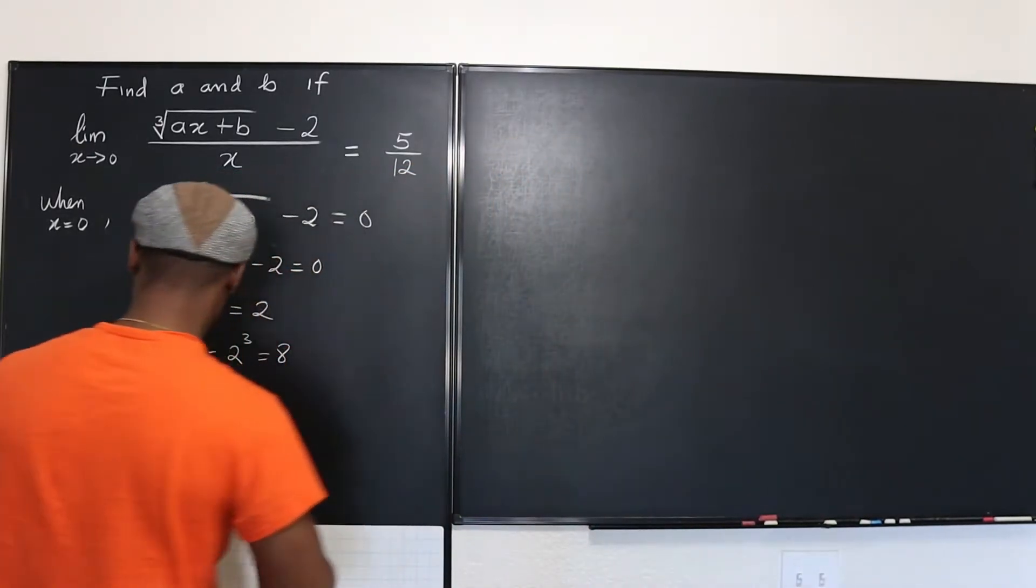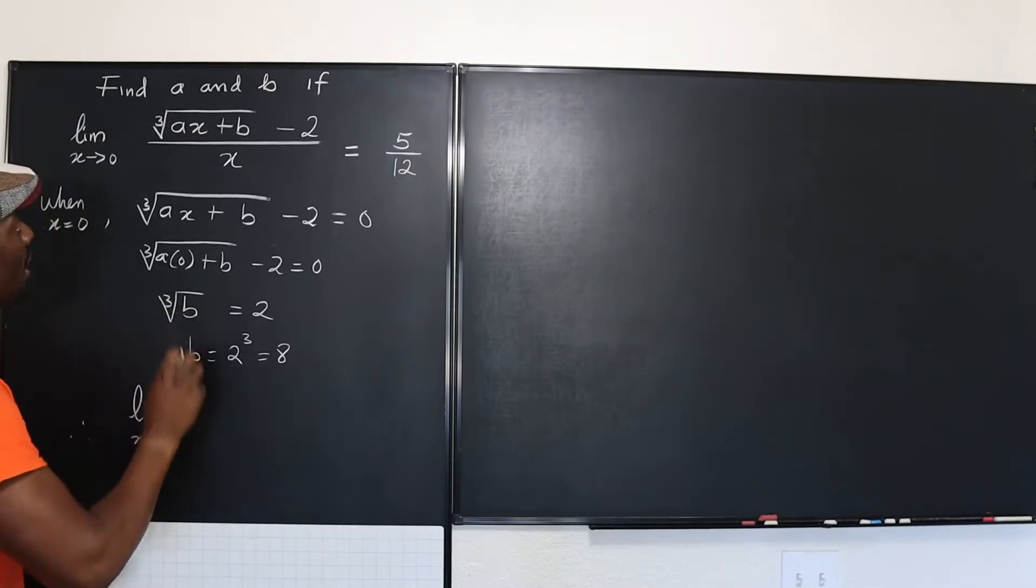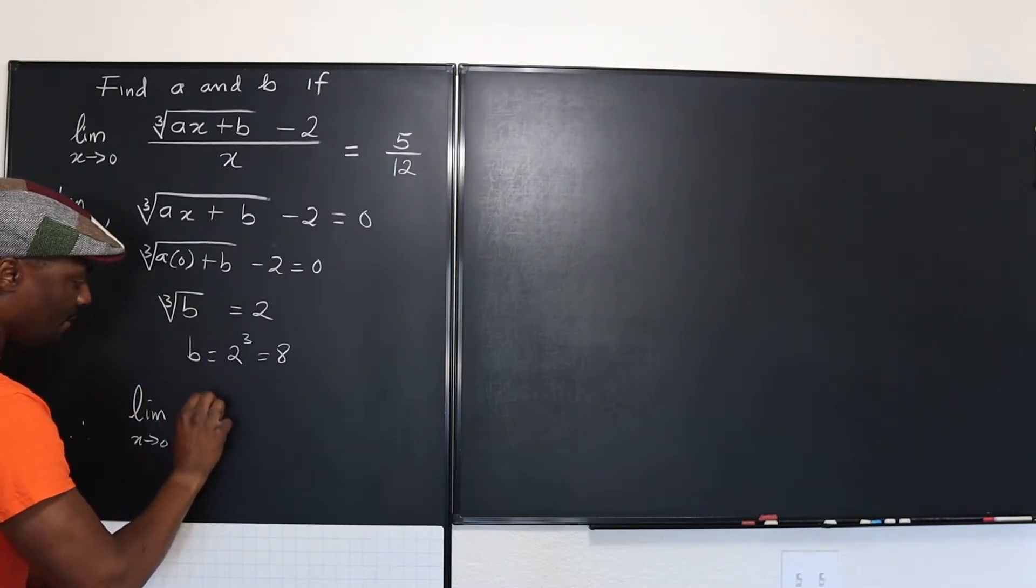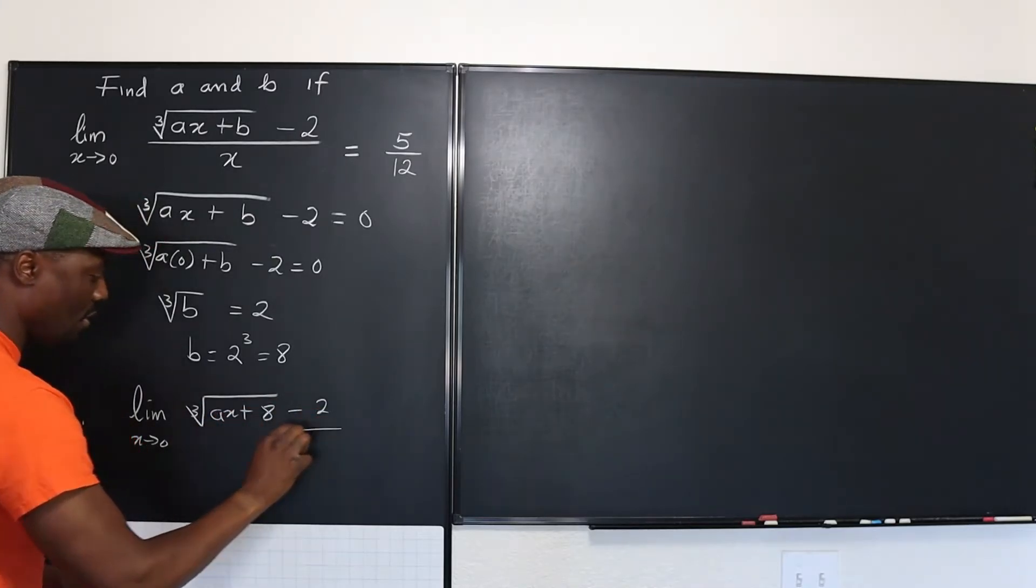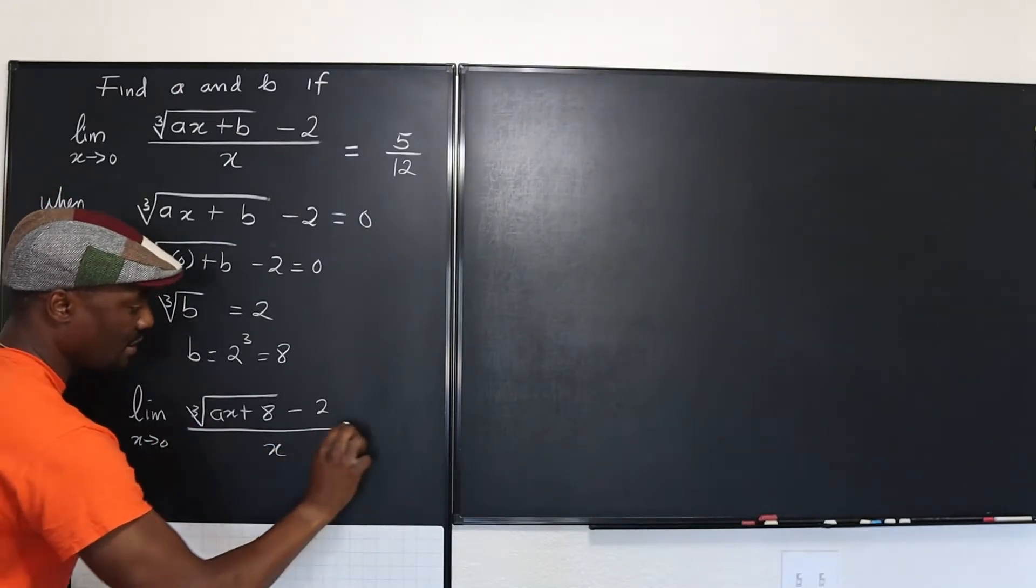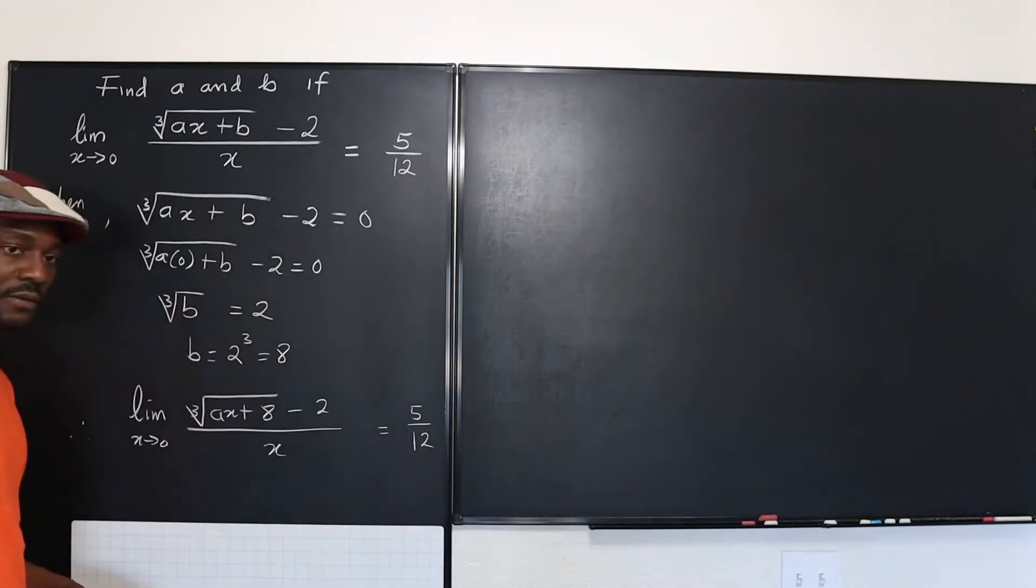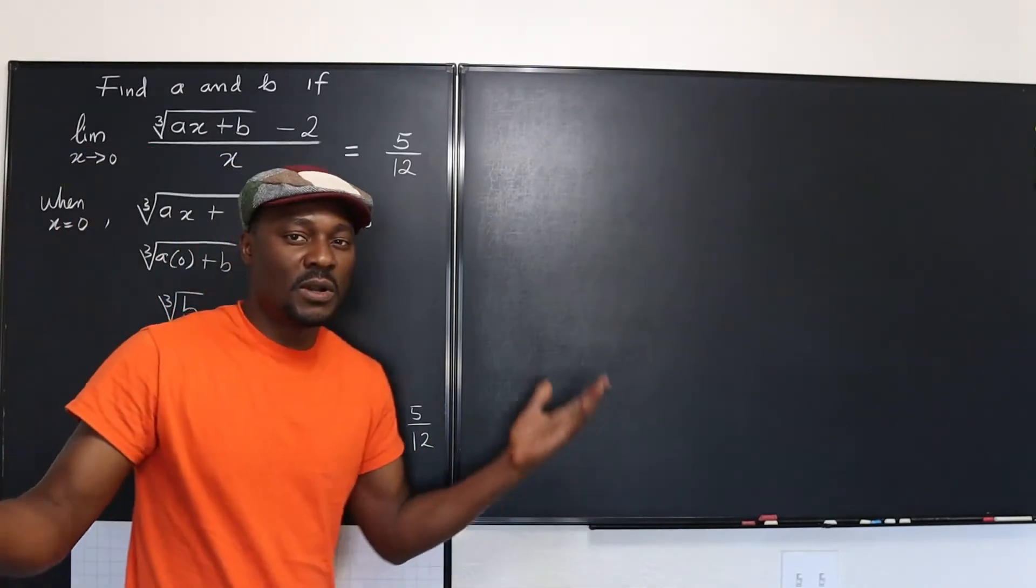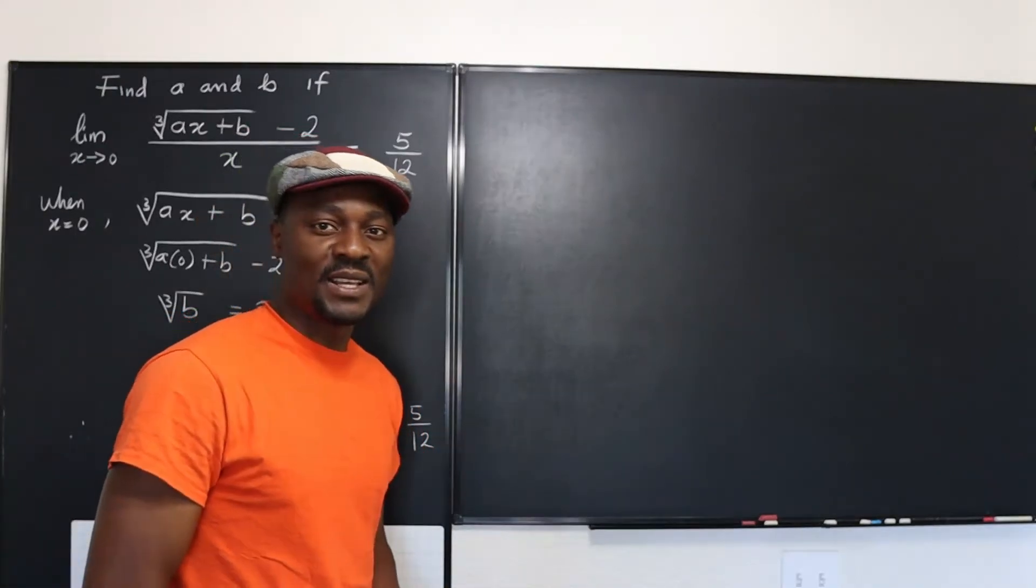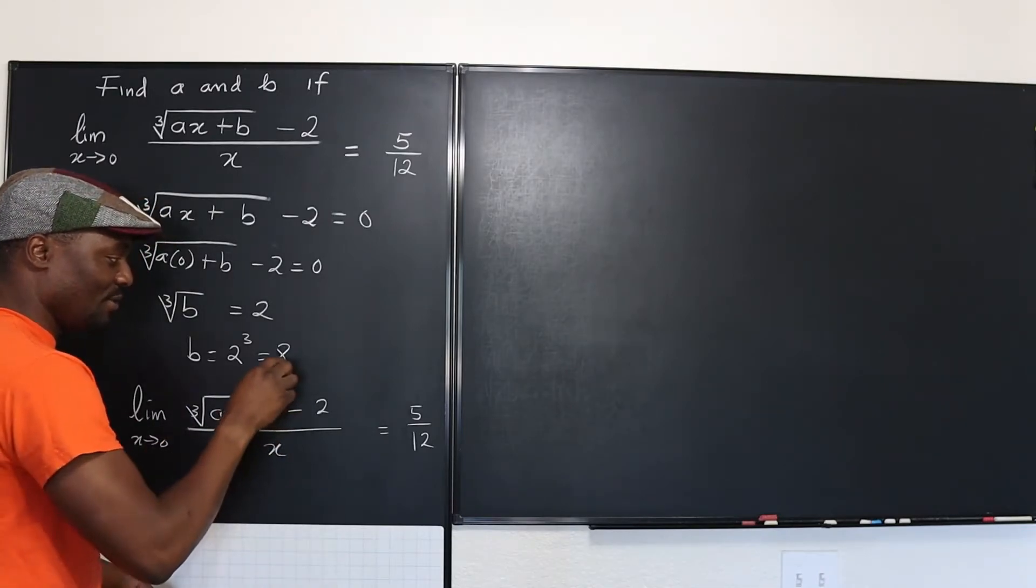I'm going to rewrite this so we can say, therefore, that the limit as x goes to zero of the cube root of ax plus eight minus two over x equals five over twelve. So I'm just going to take the limit of this and then compare it to five over twelve and see if I can get something good. Because the only thing I'm looking for now is A, I already know that B is equal to eight.